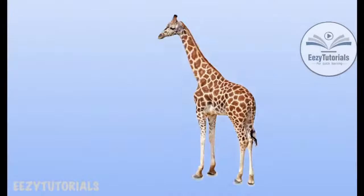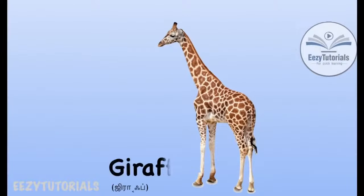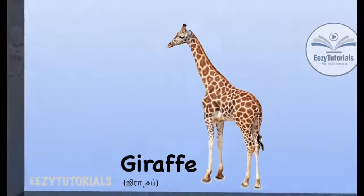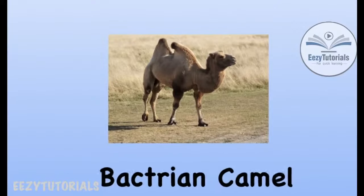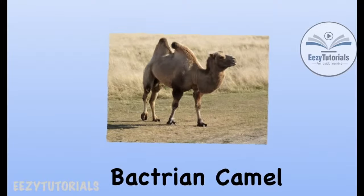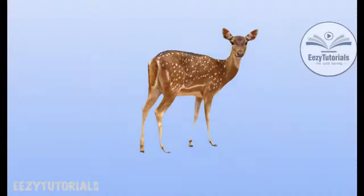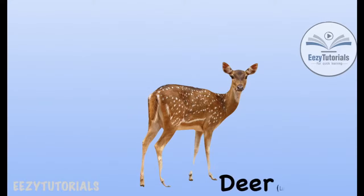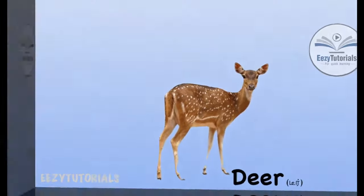Animal with a large neck — Giraffe. An animal with two humps — Bactrian Camel. Animal with beautiful spots — Deer.